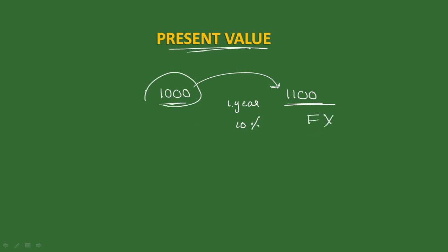If you have 1,000 and you add interest to get the future value, the reverse process is to convert the future value back to the present value.